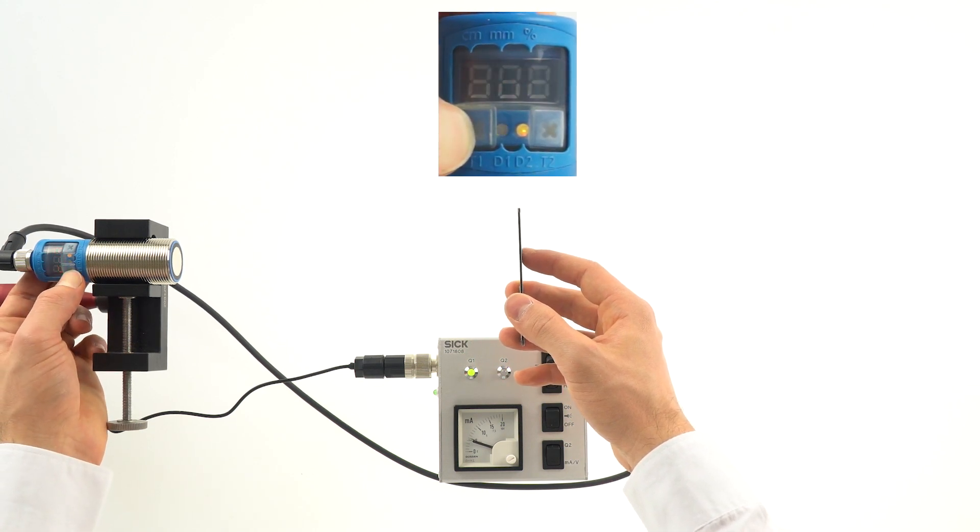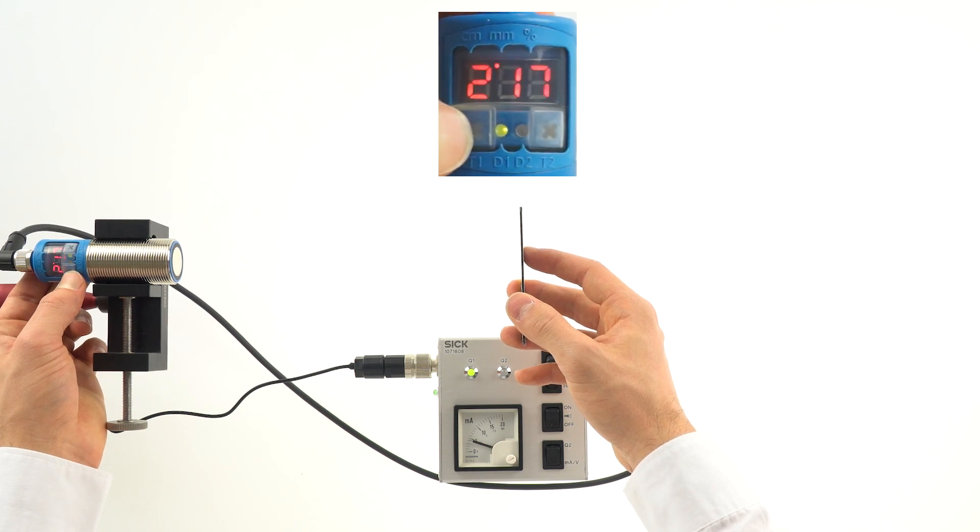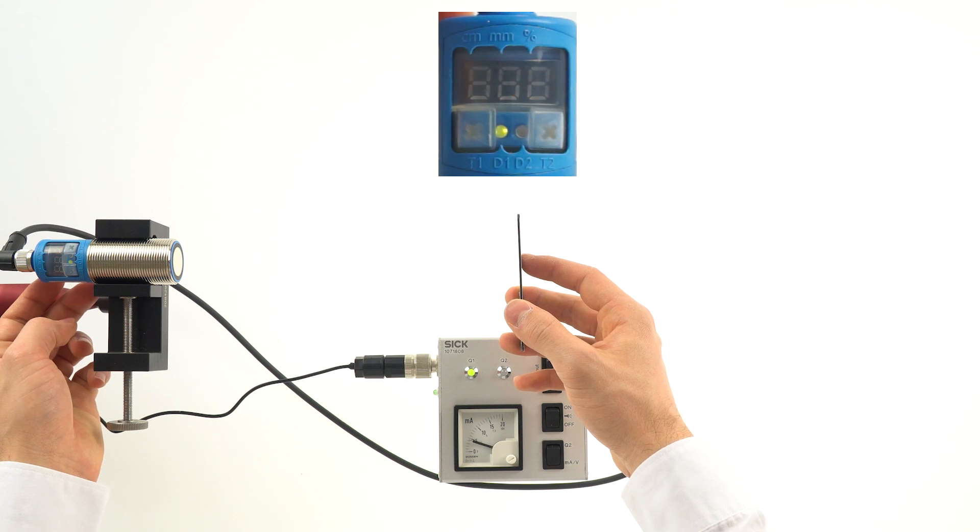Then press the T1 key until IU appears in the display. The sensor is showing the current measurement value.